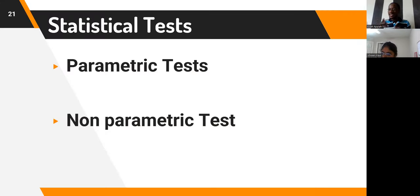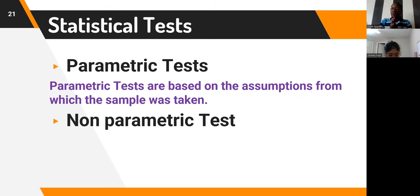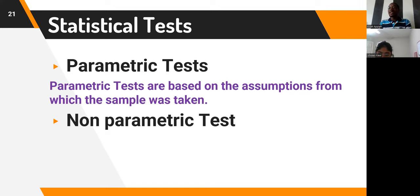Now, statistical tests. There are basically two categories: parametric tests and non-parametric tests. Parametric tests are based on the assumptions from which the sample was taken. If you assume your data is normally distributed — as is usually the case since we focus on the central limit theorem — any estimation of a mean in generalization to the population would seem to be an accurate representation of the population. So we always expect our distribution to be normally distributed.